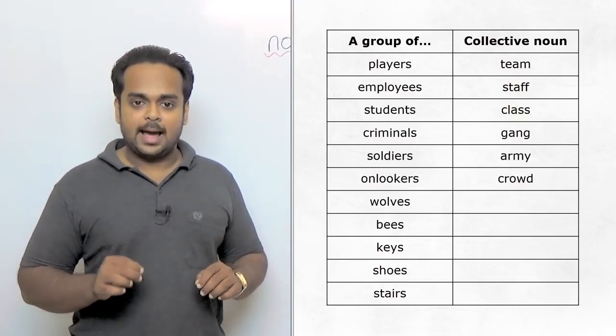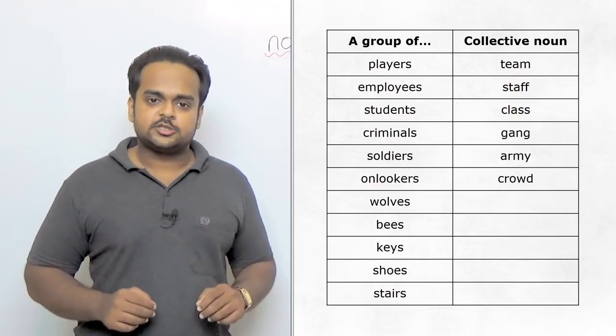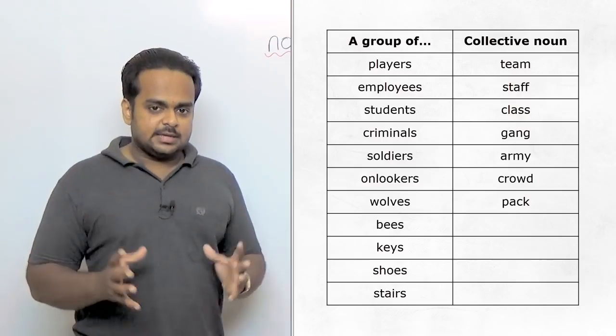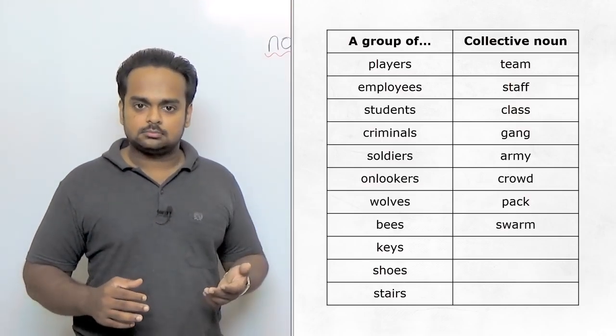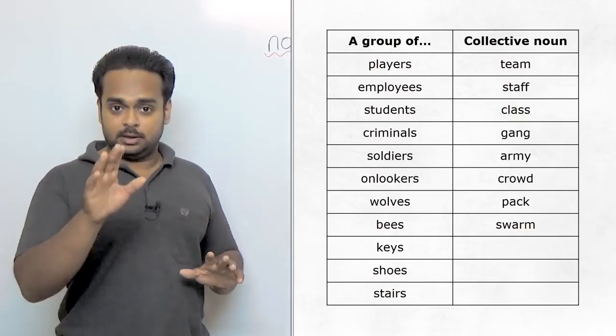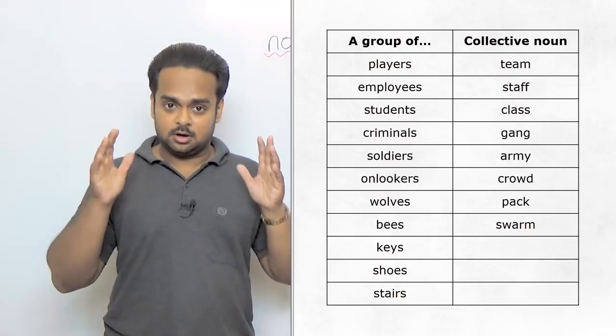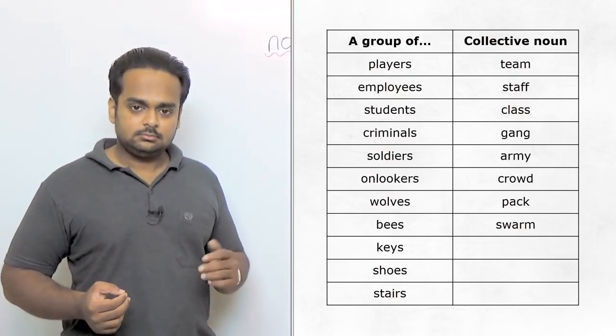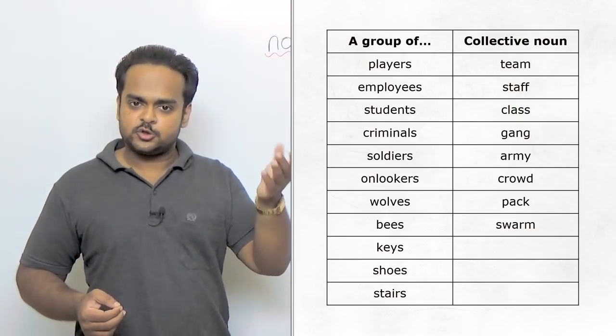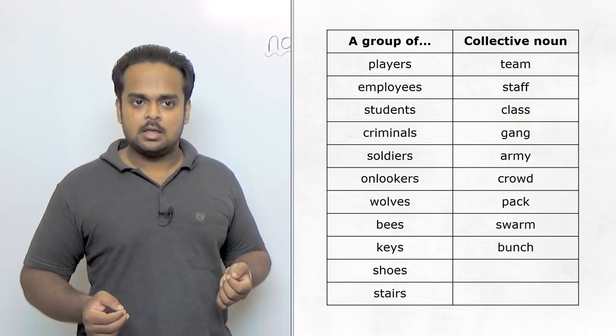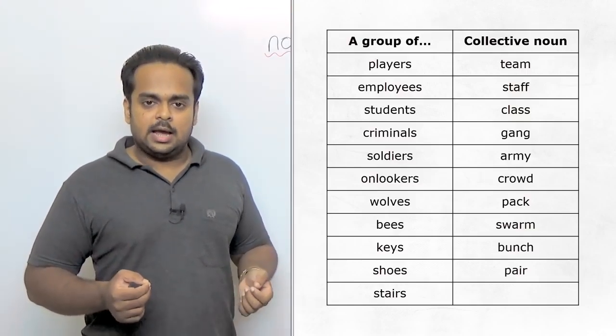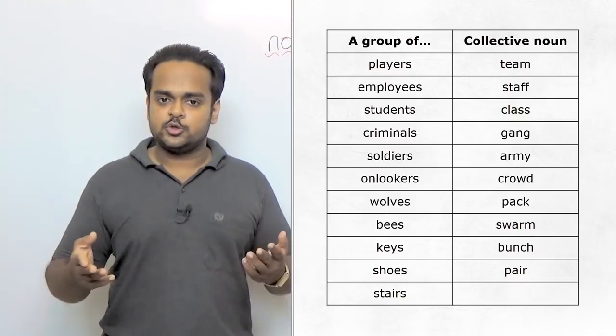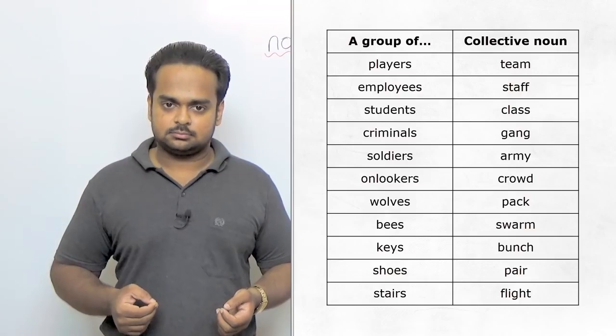There are also collective nouns for animals. For example, a group of wolves is called a pack. And wolves are very dangerous when they're in a pack. A group of bees is called a swarm. If you ever see a swarm of bees coming towards you, please run because they can sting really hard and it hurts very bad. There are also collective nouns for things. Like if I have five or six keys in my hand, we call it a bunch of keys. What about two shoes, a pair? And when there are stairs that you have to take from one floor of a building to the next floor, it's called a flight of stairs.